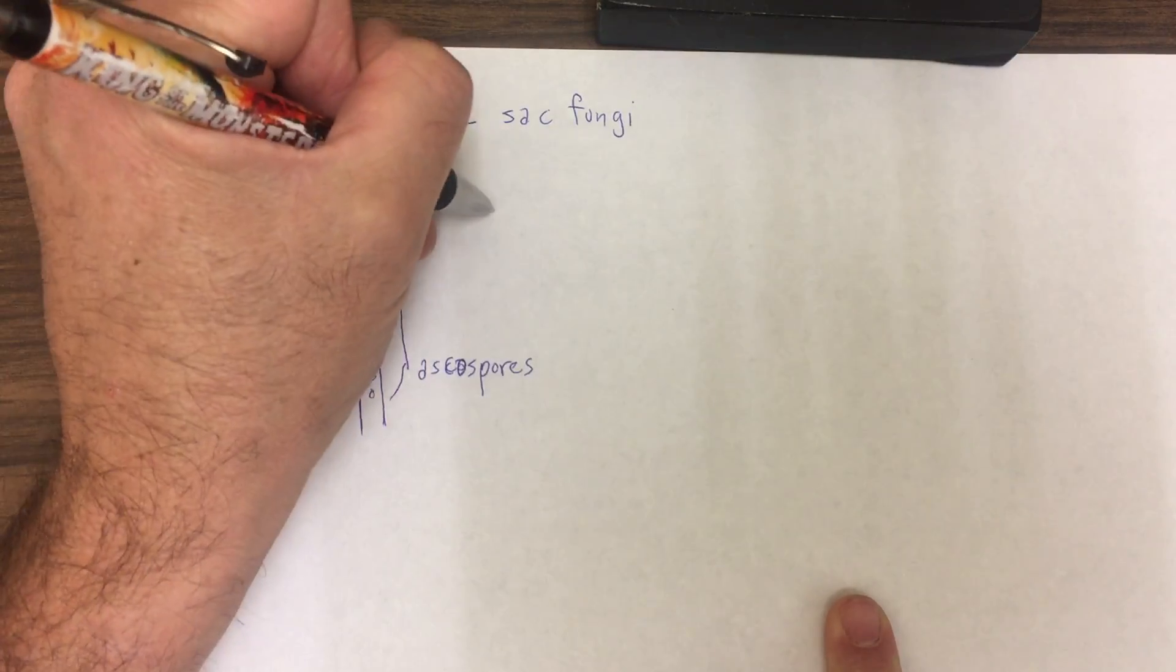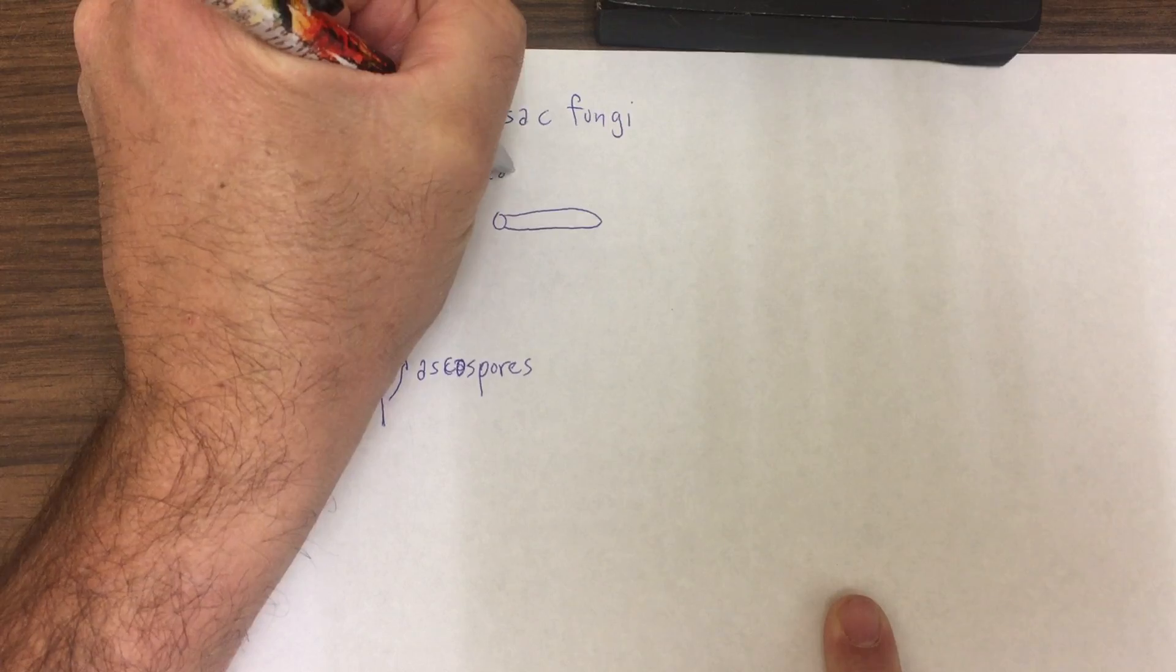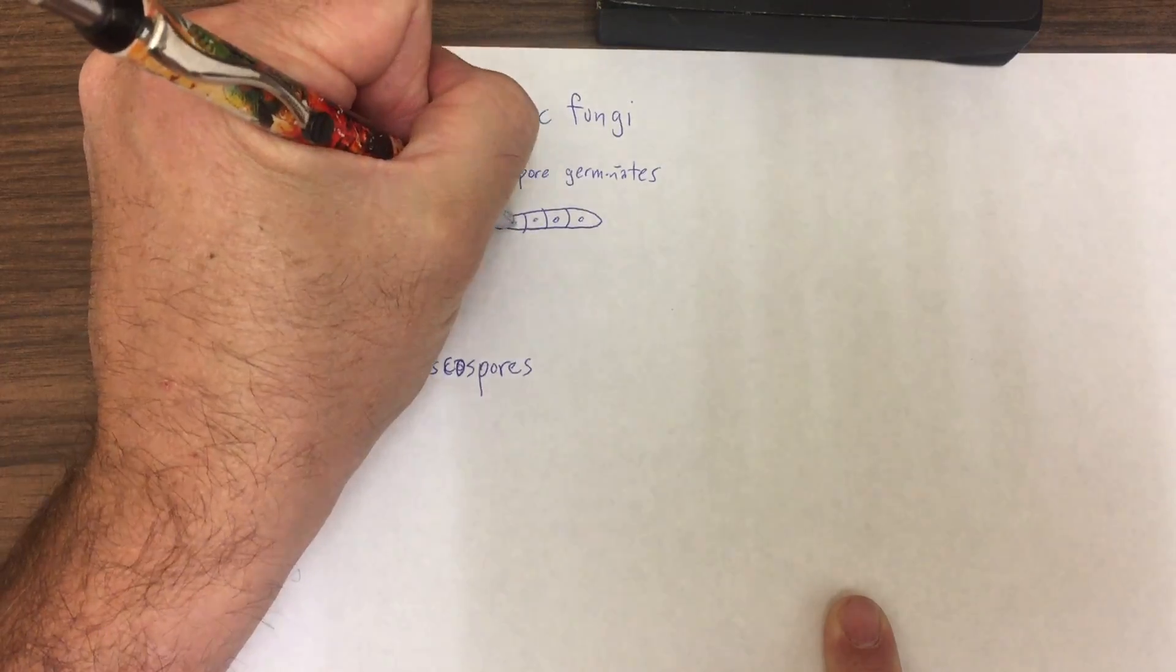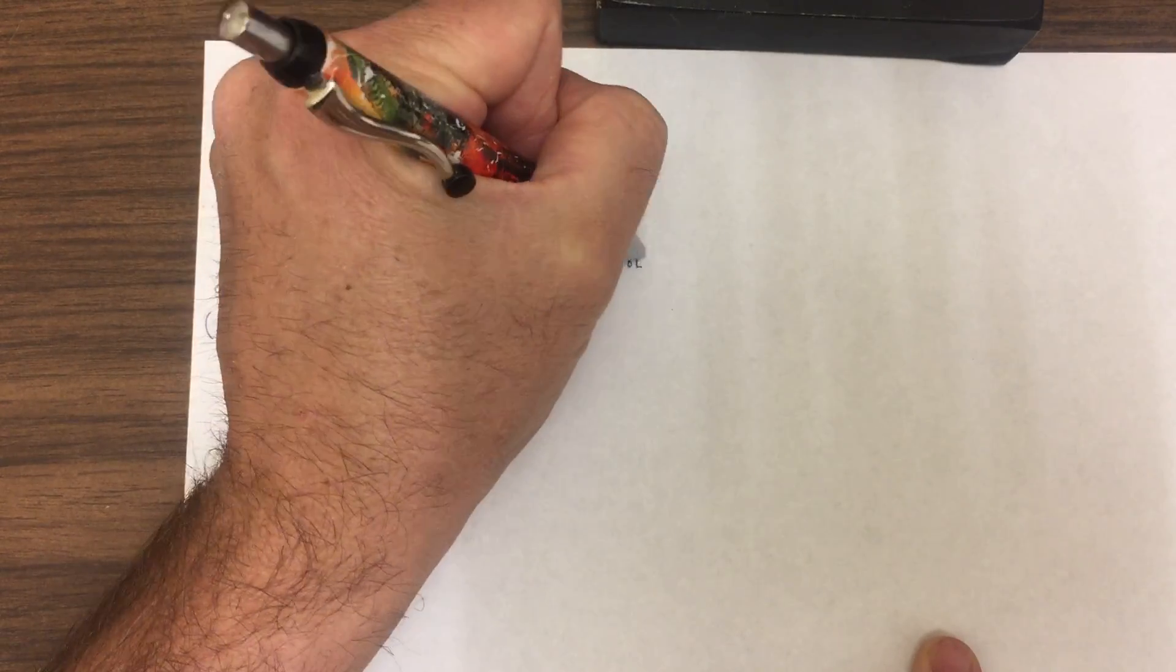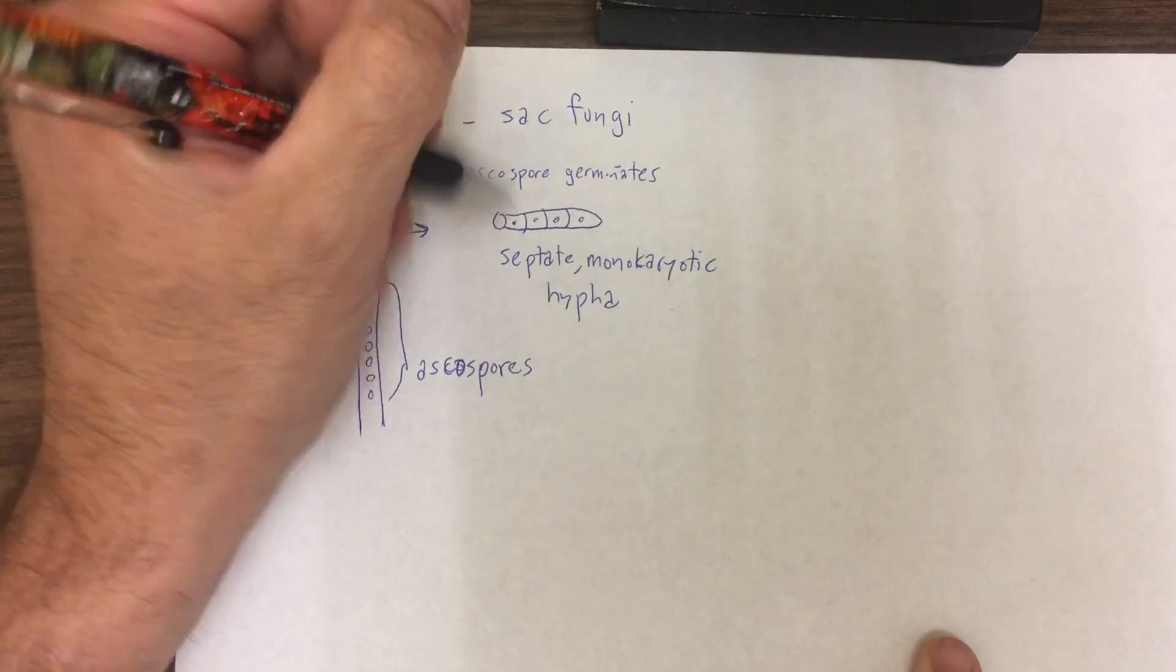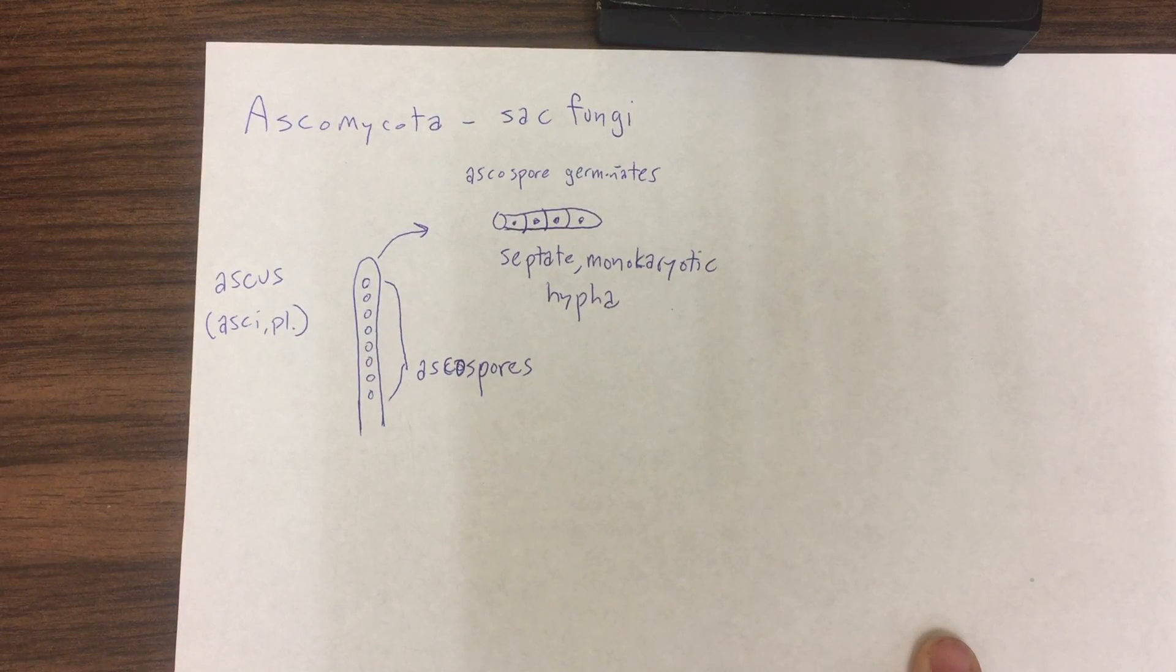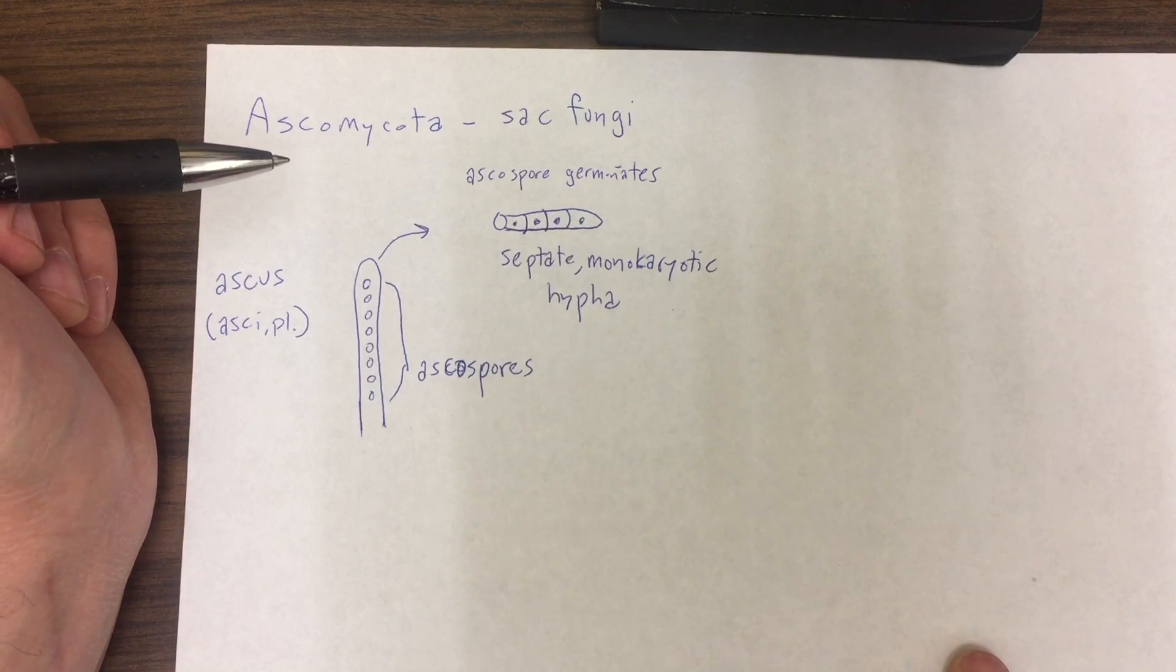So let's take one of these ascospores and germinate it. What do we get? Just like we'll see in the basidiomycetes, we have a septate monokaryotic hypha. It's septate because there are cross walls between the nuclei, so each one of these little chambers here is a cell with one nucleus. Very different from what we saw in the zygomycota, chytridiomycota, and glomeromycota.